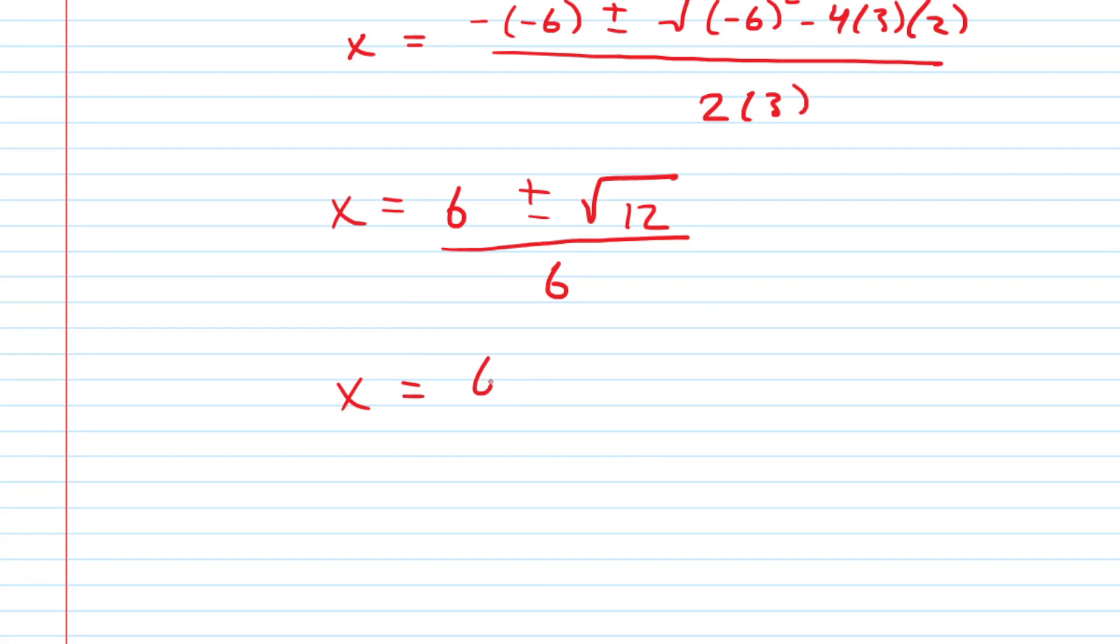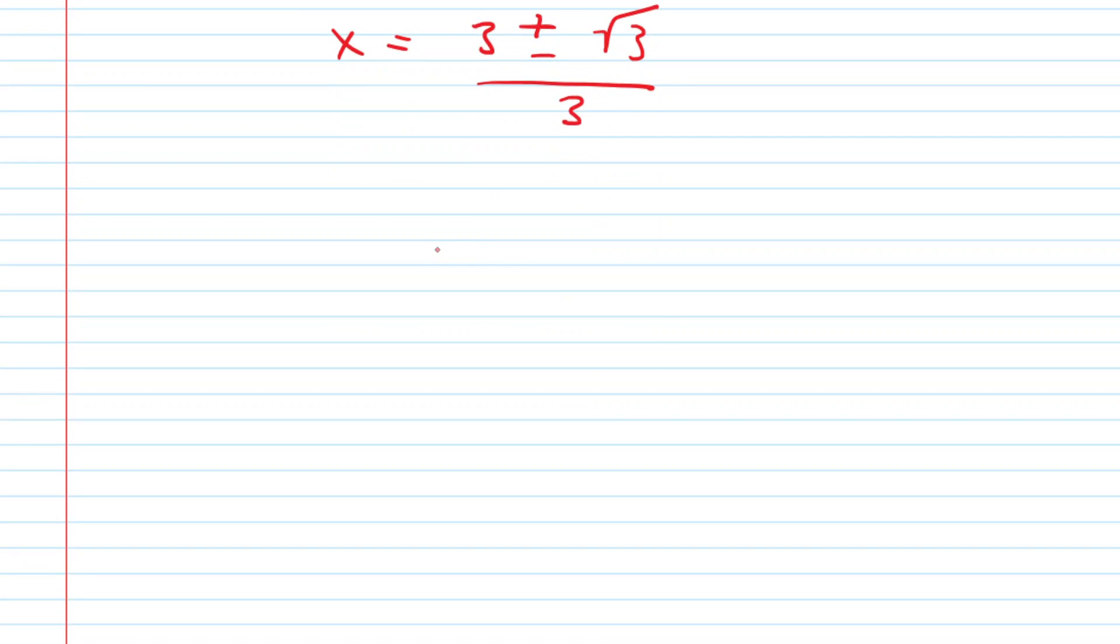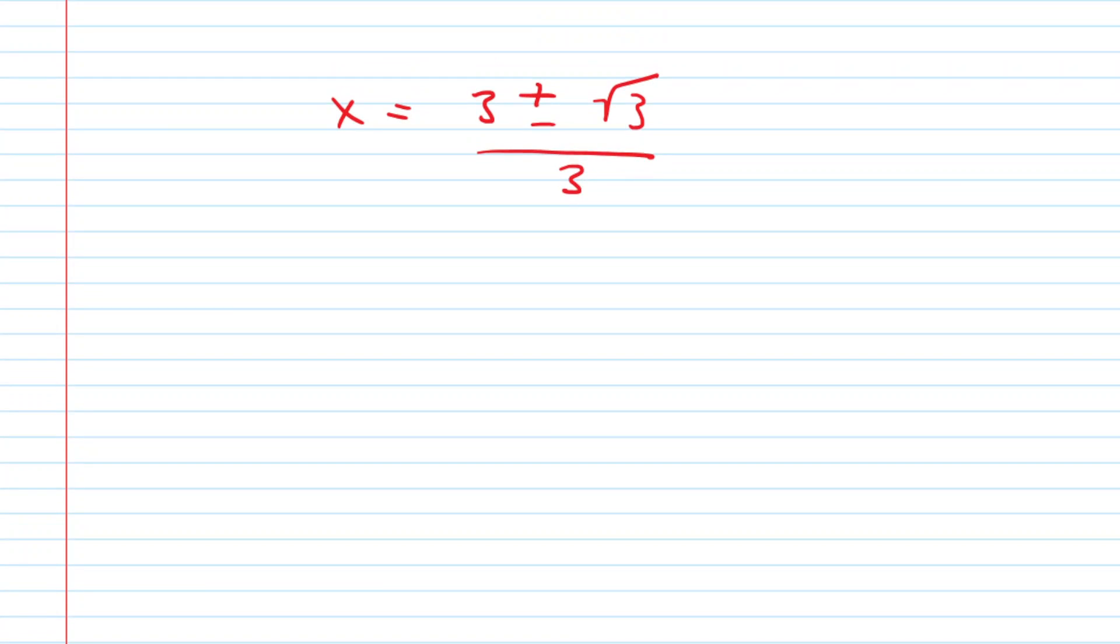Let's rewrite the radical 12 as radical 4 times radical 3. That'll be convenient because radical 4, or the square root of 4, is just 2. So we can make that into a 2 right here. And then we can simplify it a little bit further by dividing every coefficient by 2. So we'll divide the 6 by 2, that 2 by 2, and this 6 by 2.